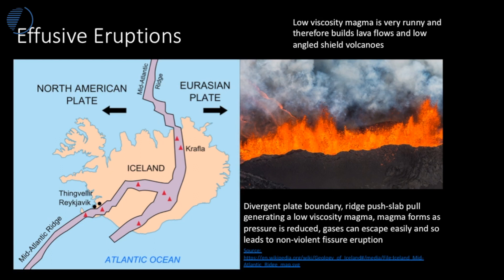Effusive eruptions dominate at mid-ocean ridges, like here on the Mid-Atlantic Ridge. New crust forms as the plates pull apart — here the North American plate moving westwards and the Eurasian plate moving eastwards. New crust forms at the junction between the plates, and plates pull apart at a range of speeds between about 1 cm to 11 cm per year.